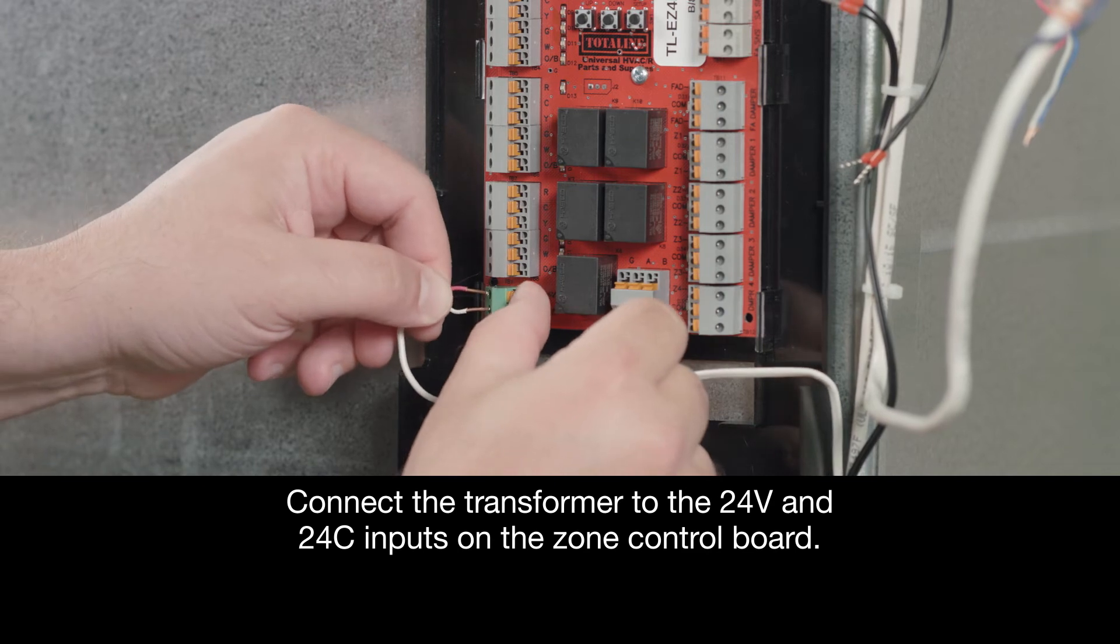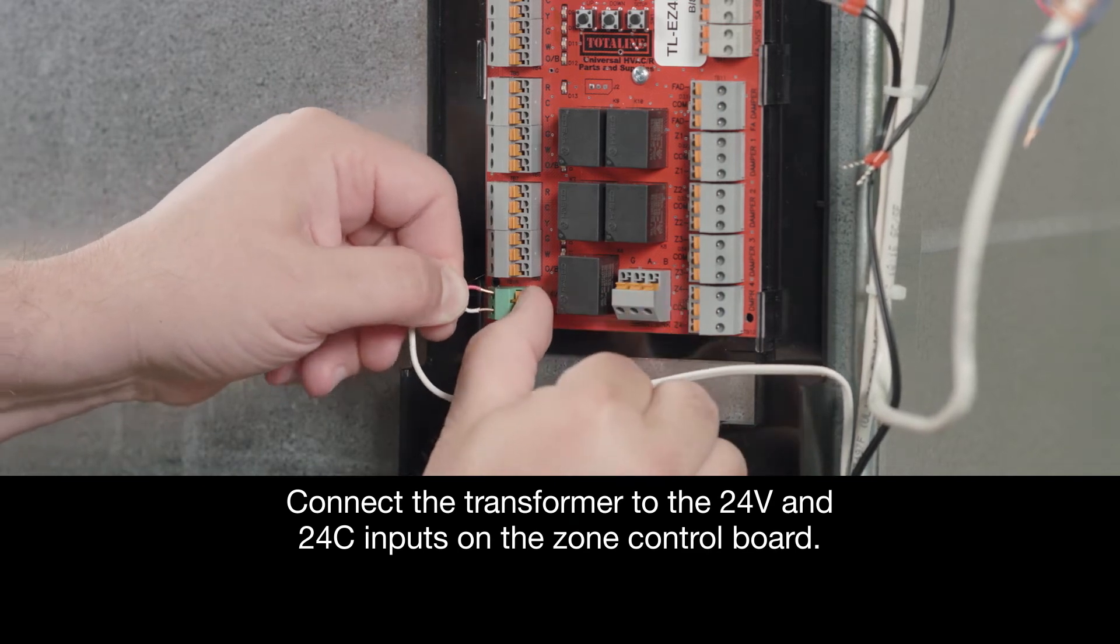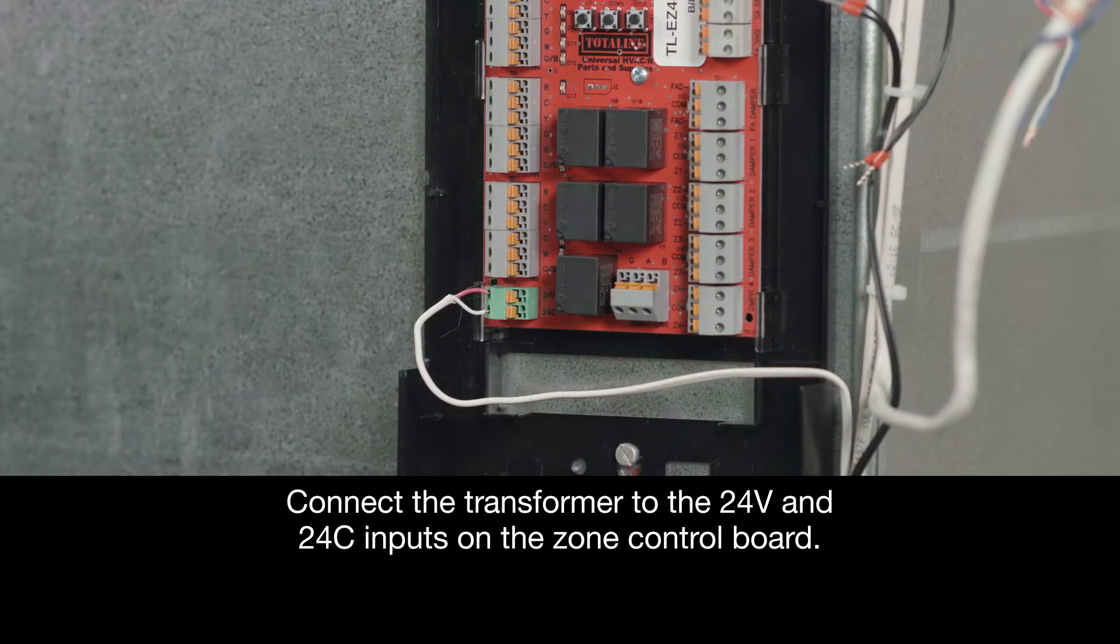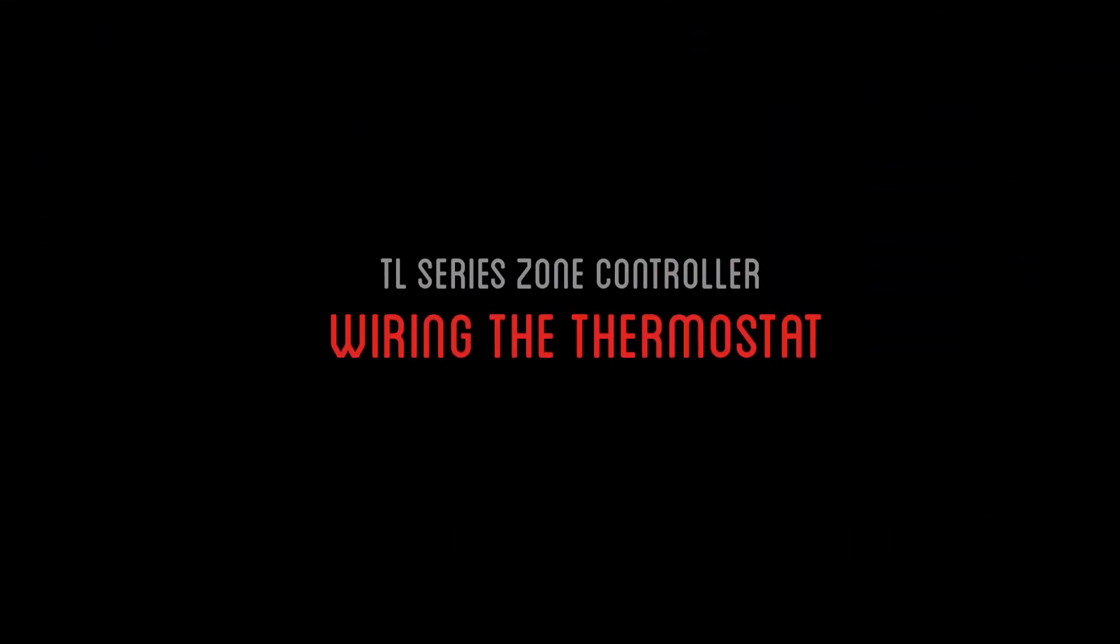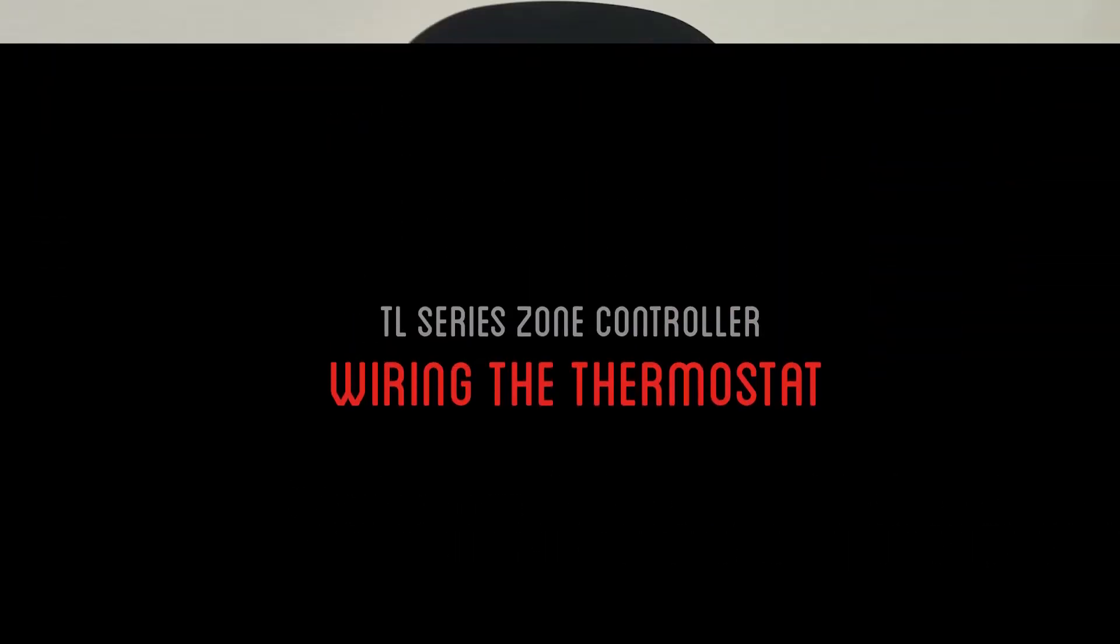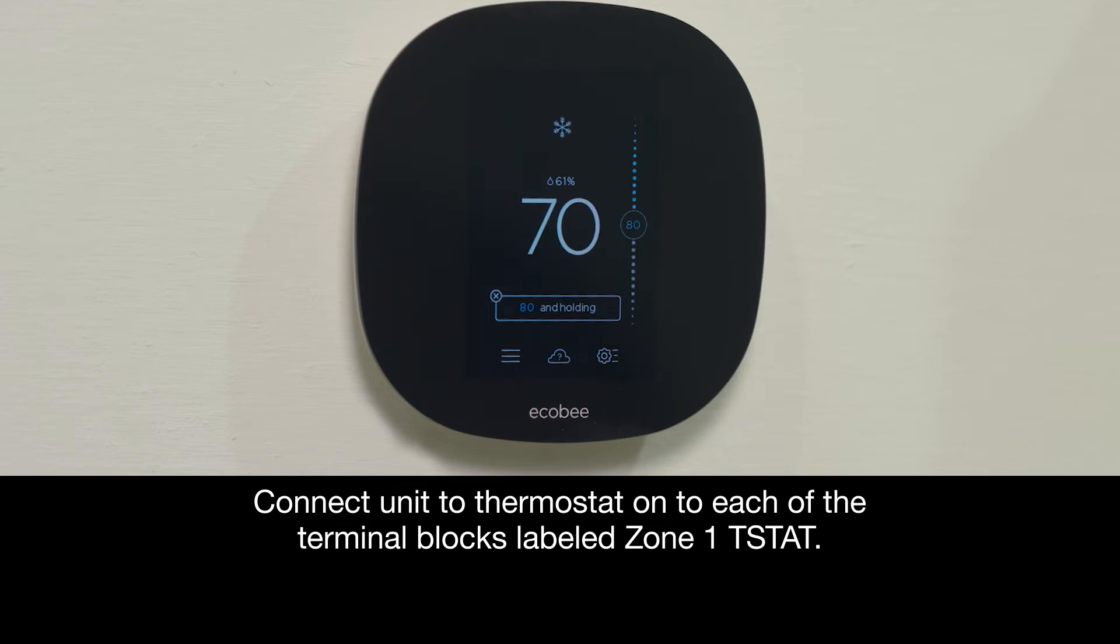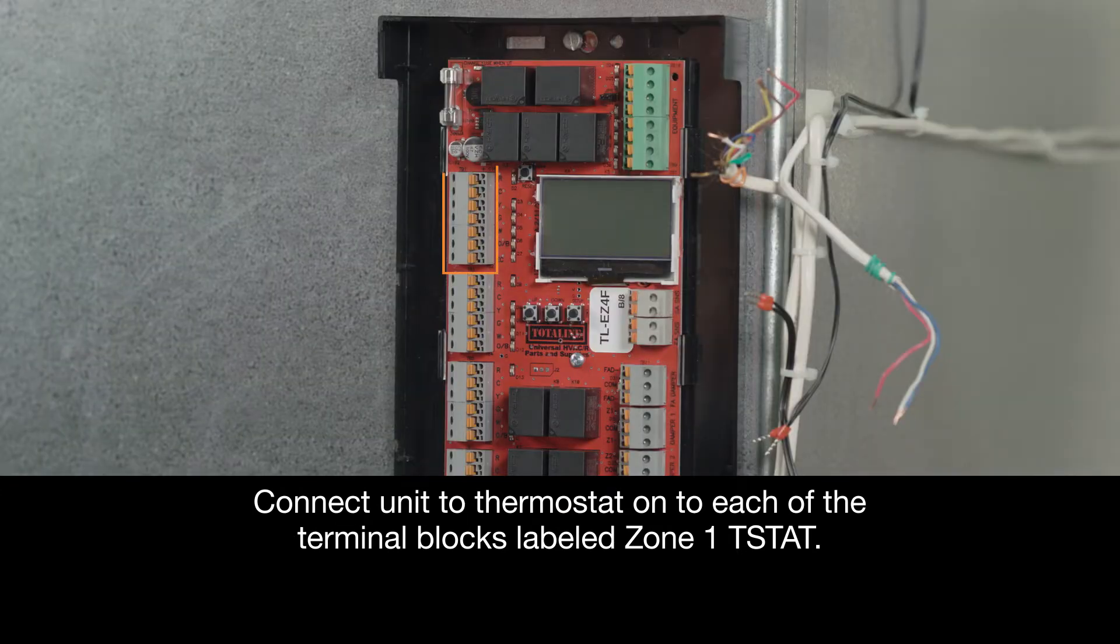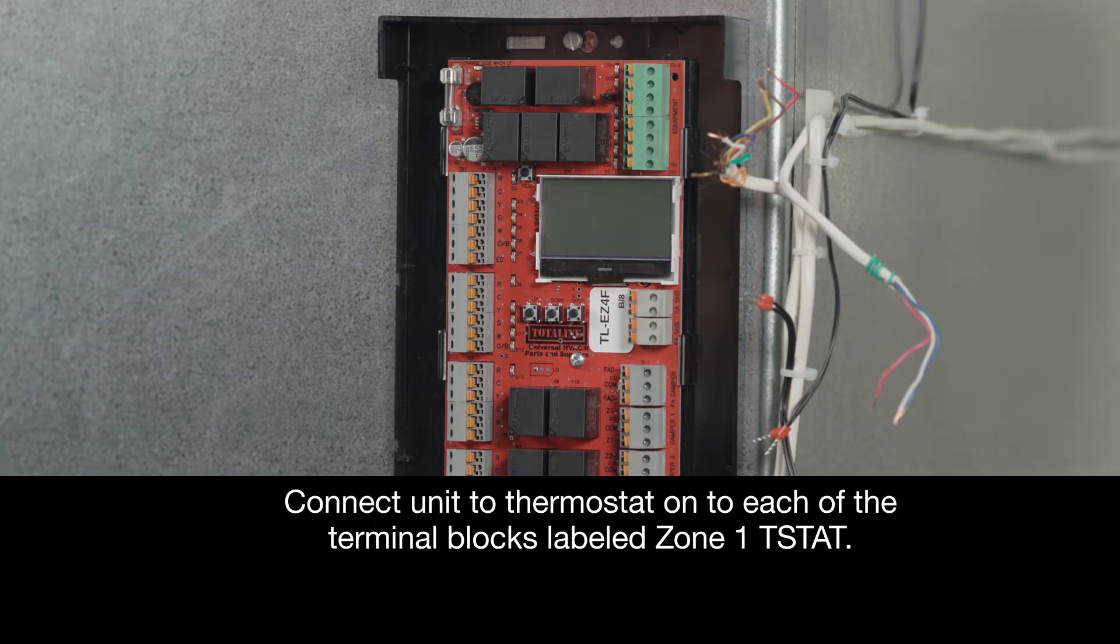Next, we'll connect the transformer to the 24V and 24C inputs on the zone control board. Today, we're connecting this unit to an Ecobee 3 light thermostat onto each of the terminal blocks labeled Zone 1 T-STAT.